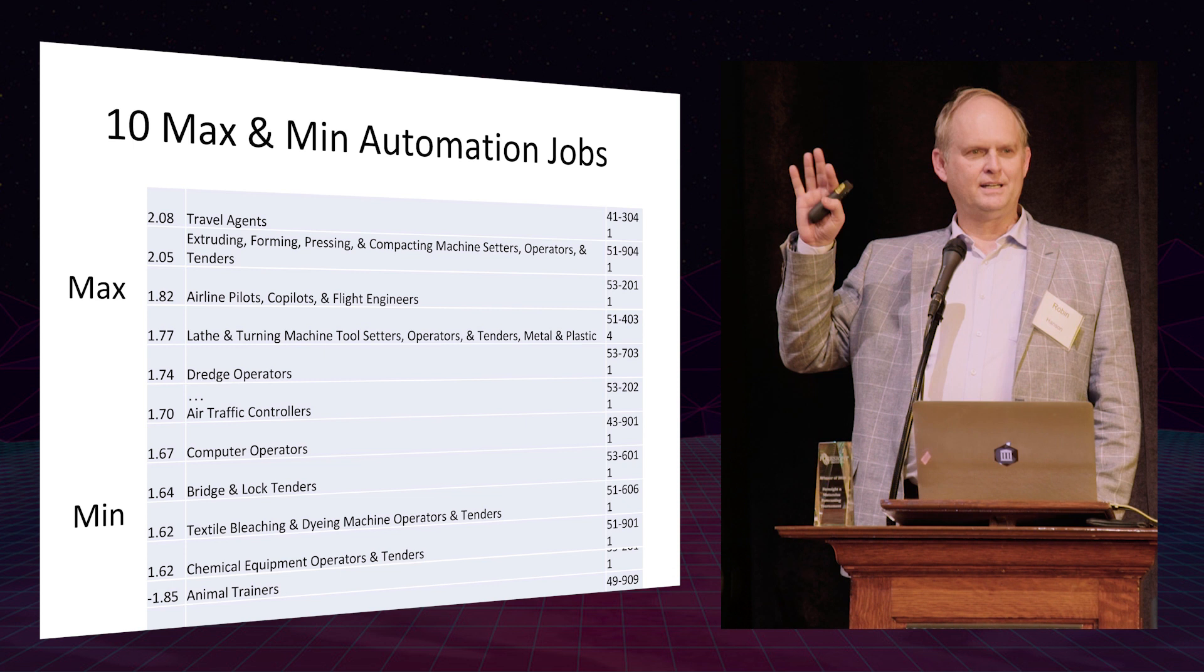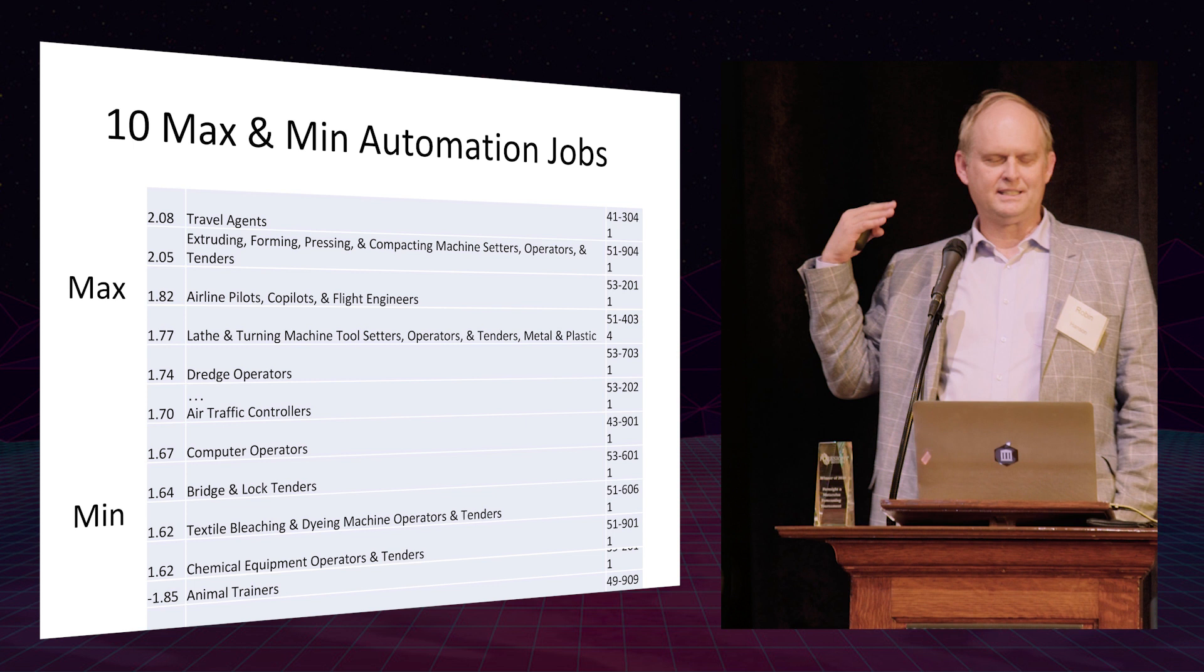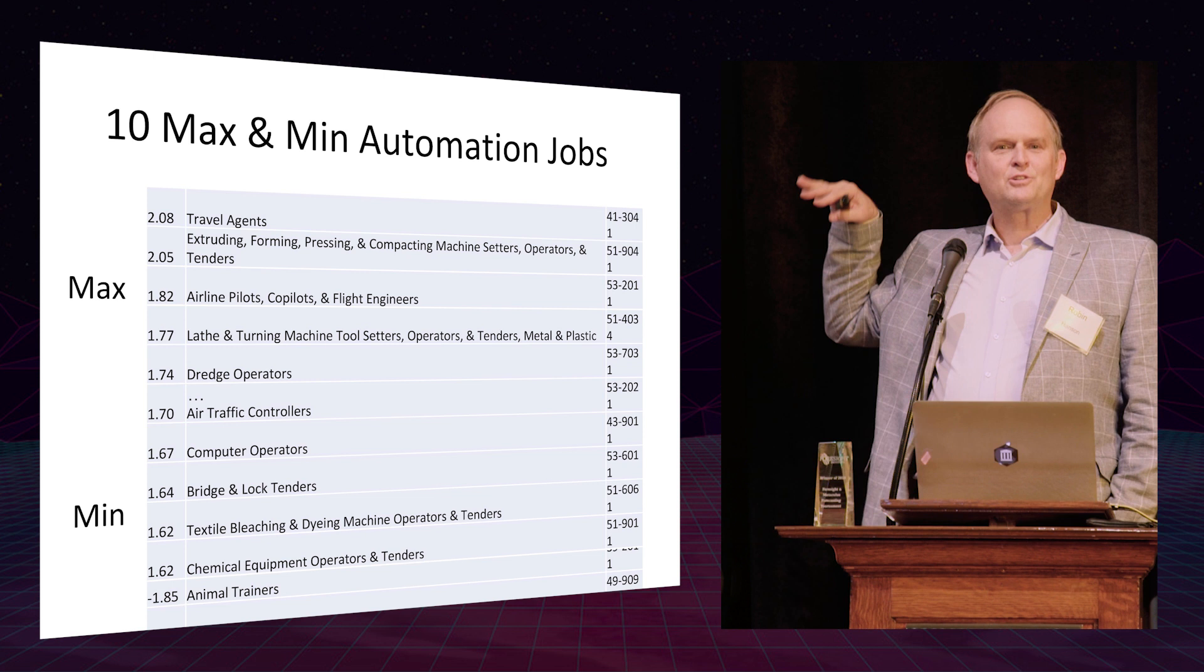For example, the most automated jobs are at the top of this list. Travel agents, airline pilots, least automated at the bottom, actors, makeup artists, carpet installers. It's actually a sensible ranking. These are ranked by experts looking at the jobs, comparing them to other jobs nearby. It's subjective but it seems to be reasonable.